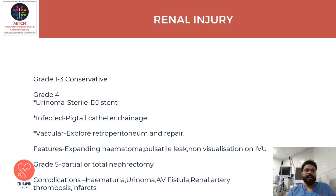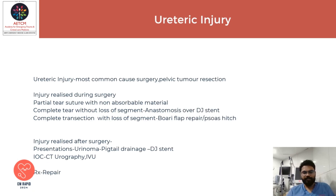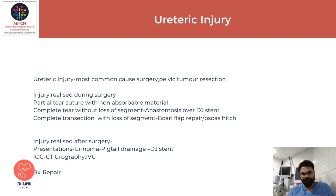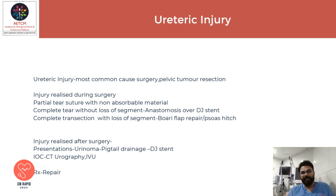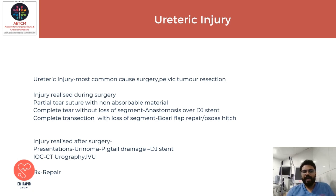Complications of renal injuries include hematuria, urinoma, heavy fistulas, renal artery thrombosis, and infarct. For ureteric injuries, the most common causes are surgeries and pelvic dissections. If the injury is recognized during surgery and is a partial tear, suture with non-absorbable material. A complete tear without loss of segment can be managed with anastomosis. Complete transection with loss of segment may require a Boari flap. If injury is recognized after surgery and a urinoma is present, consider drainage and pigtail drain. The investigation of choice is CT urography or IVU, and treatment is repair.